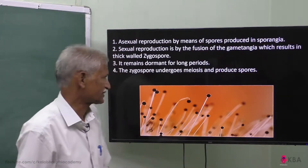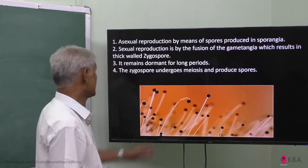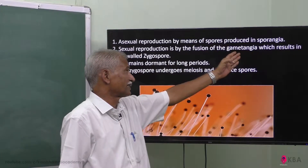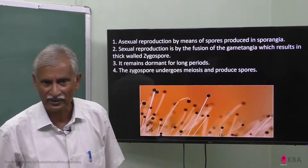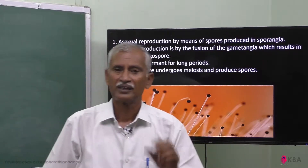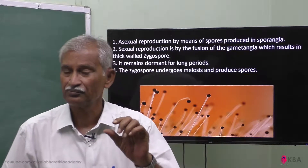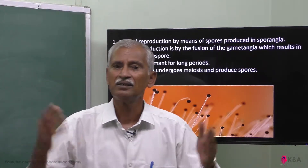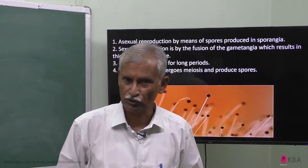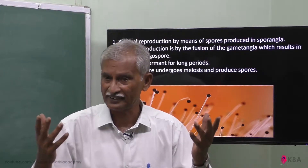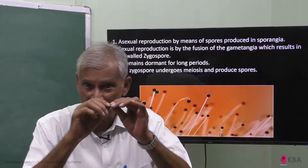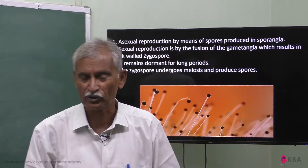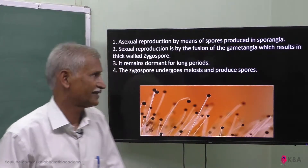Sexual reproduction involves the fusion of the gametangia. Gametes are formed, and the male and female sections fuse. This fusion produces further spores and is called gametangia fusion.